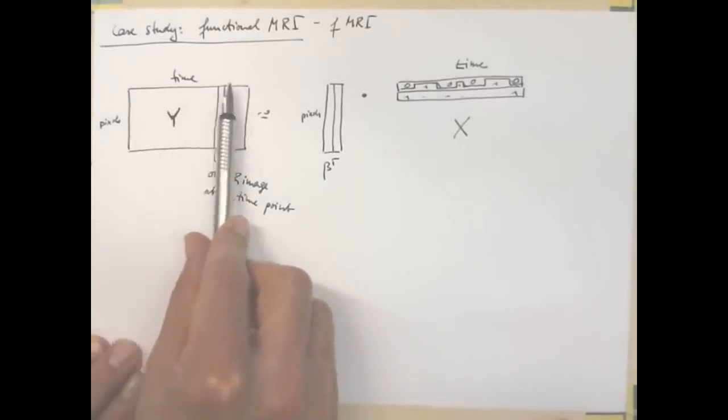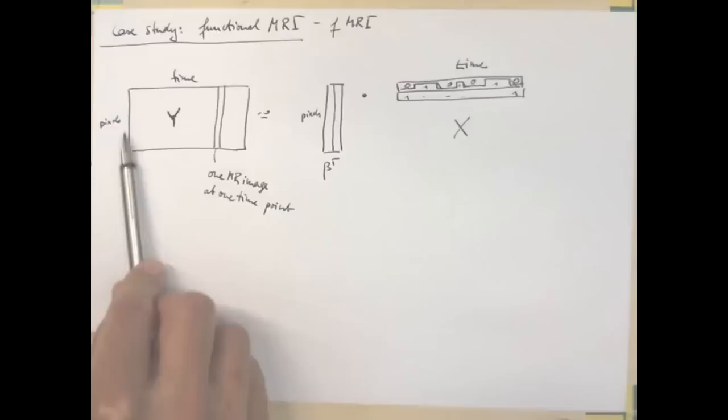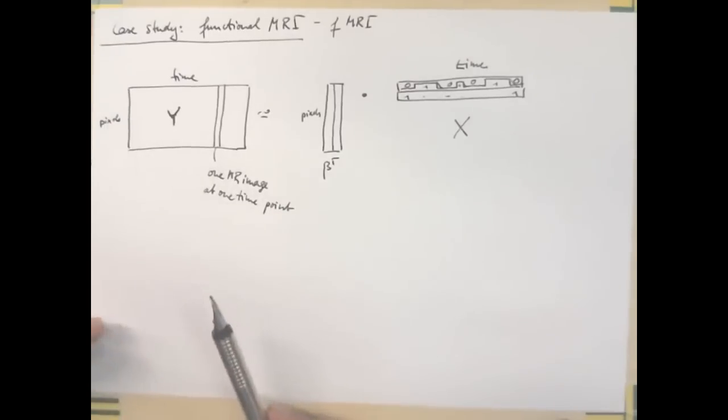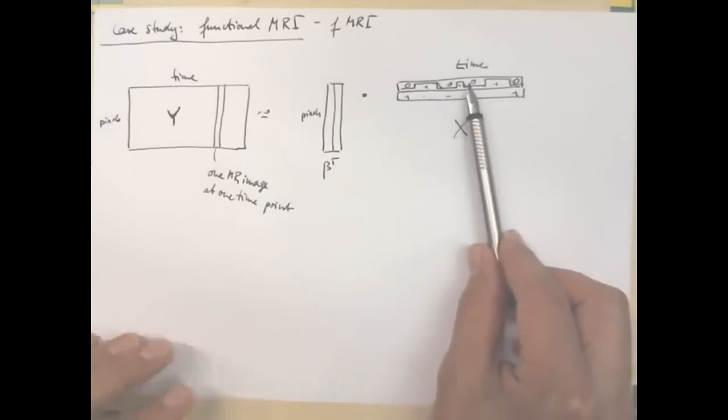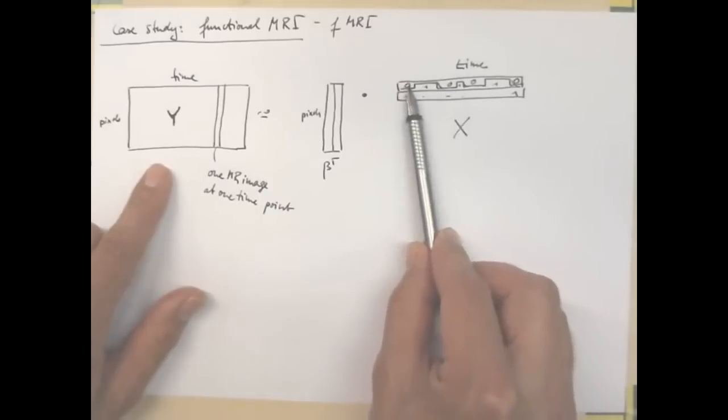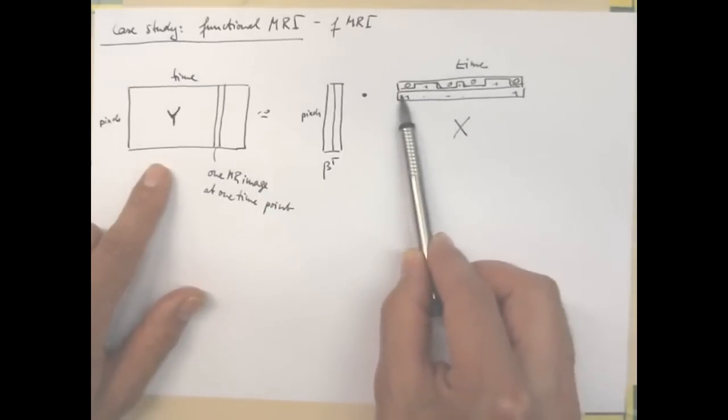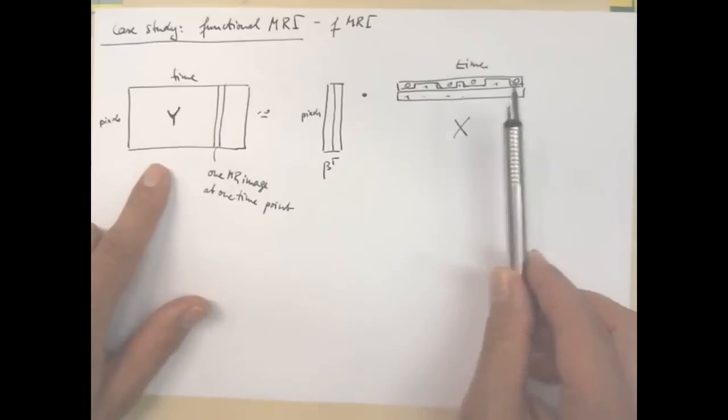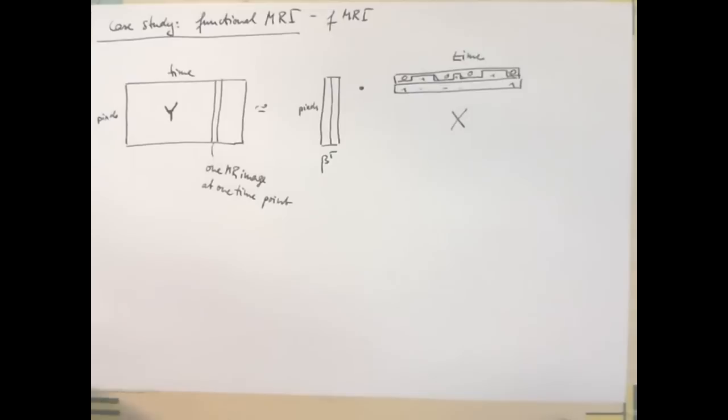But having said that, this is what it is. So let's say we have a thousand MR images over time and they have many thousand pixels, so the dimensions here are not quite to scale. We have here my independent, so this is dependent, these are the independent variables. I've here put in the pattern of my experiment, my experimental paradigm, and a constant offset. So can you explain to me what the columns of beta are then, or the columns of beta transpose?